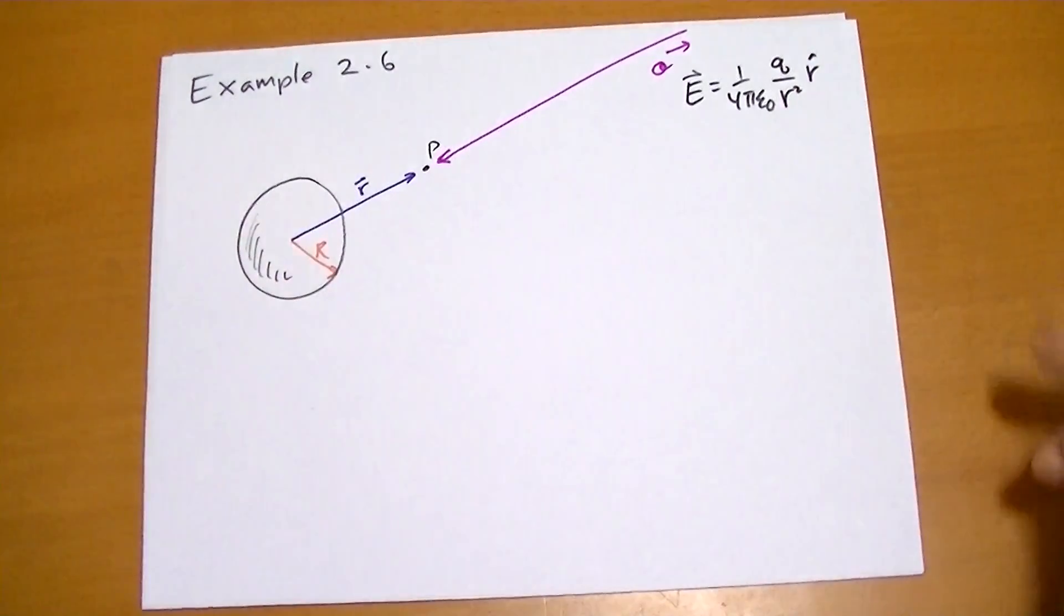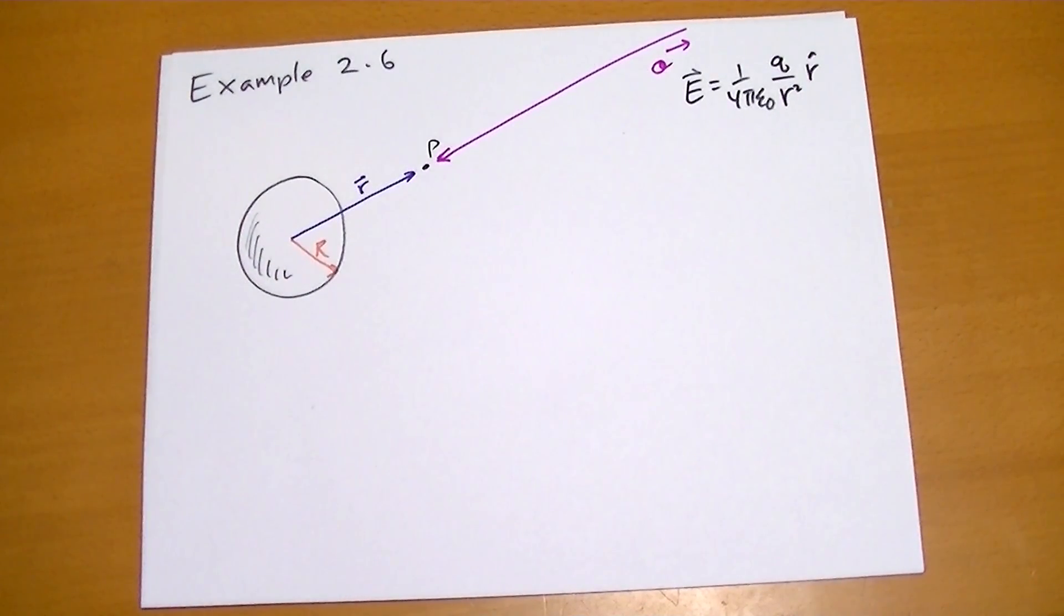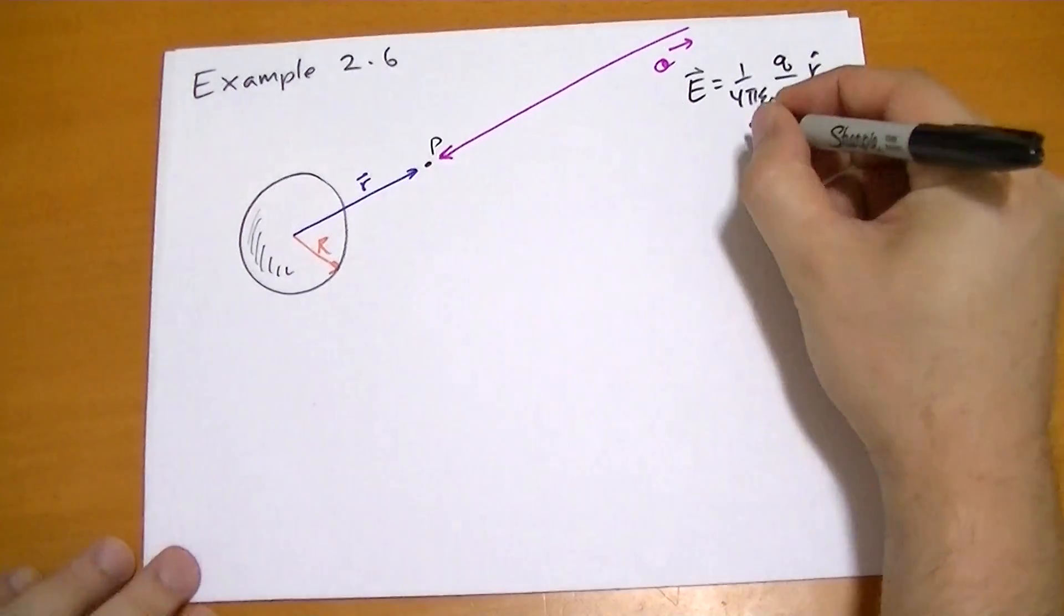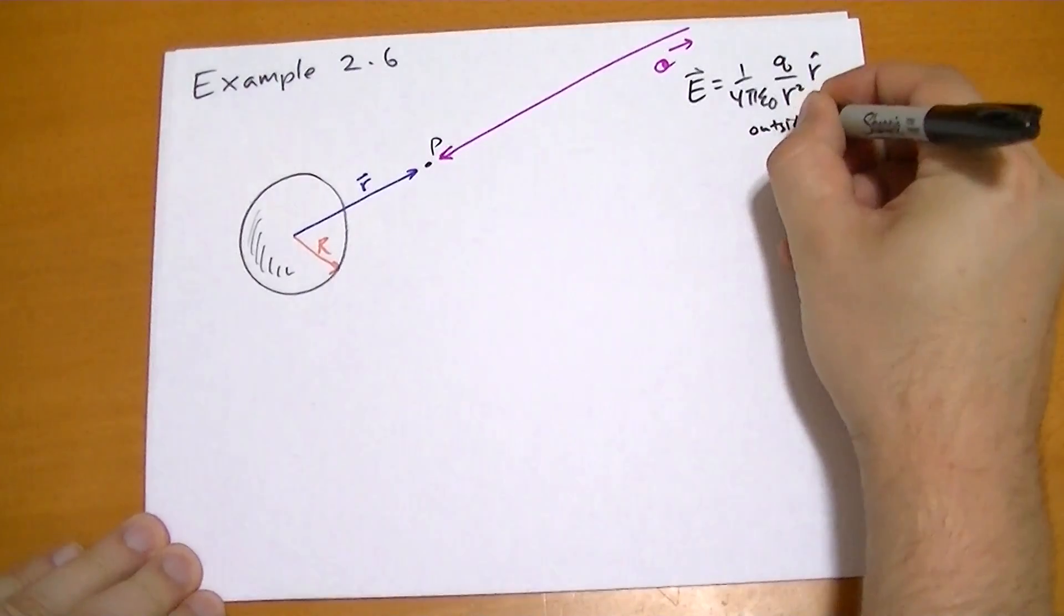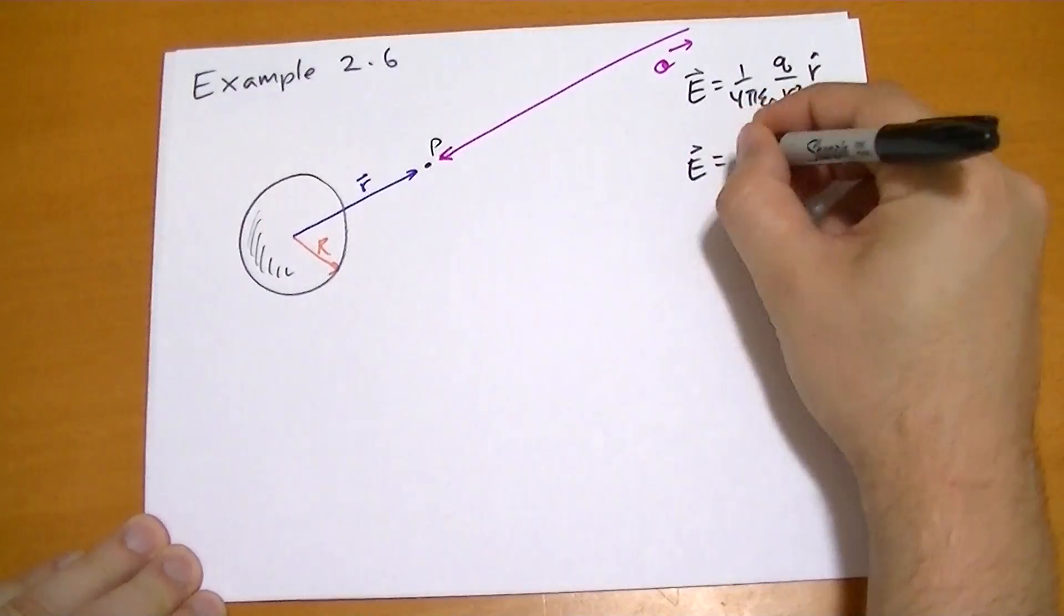We've solved this problem so many times that if you're surprised that a sphere with surface charge has the same electric field as a point, then you haven't been paying attention. So the field inside the sphere is 0, obviously, so this is outside. And e vector equals to 0 inside.